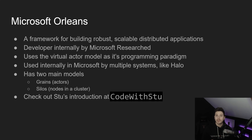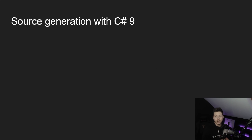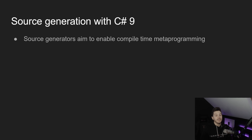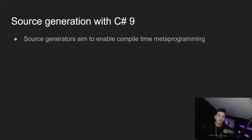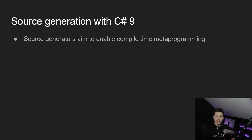The next thing I'm going to be learning is source generation, which came with C# 9, or source generators. Source generators aim to effectively enable compile-time metaprogramming. For those who don't know, reflection is a form of metaprogramming, and metaprogramming is when your code is able to analyze itself and build on top of it. Source generators want to do that at compile time, and the benefit is clear — it can be safer because it's compile-time checked, and it can be much faster because there's nothing to do during runtime.